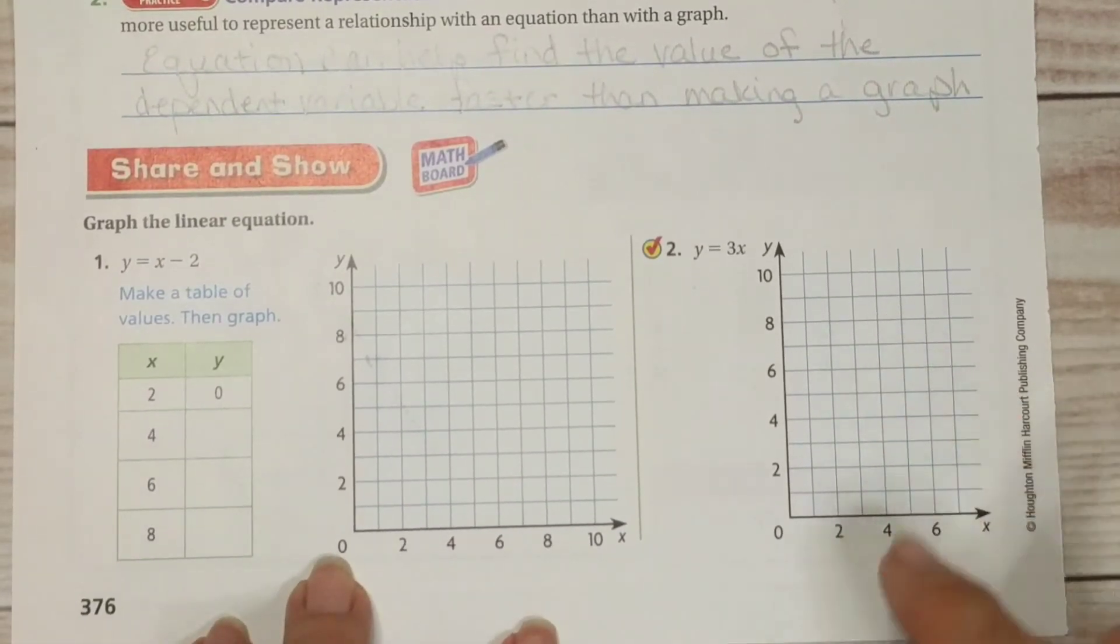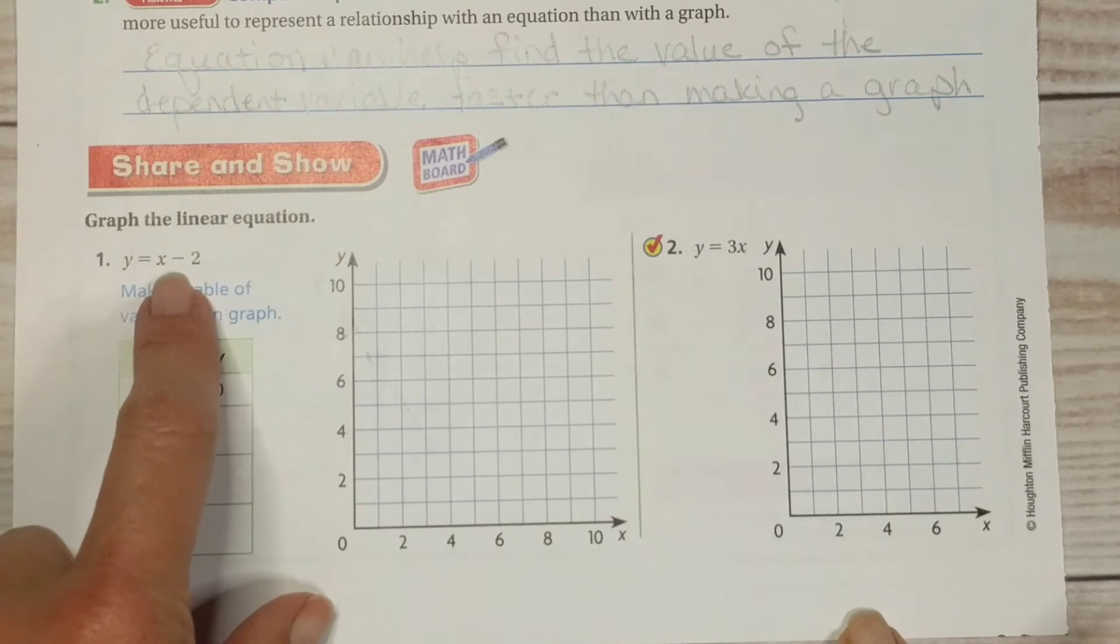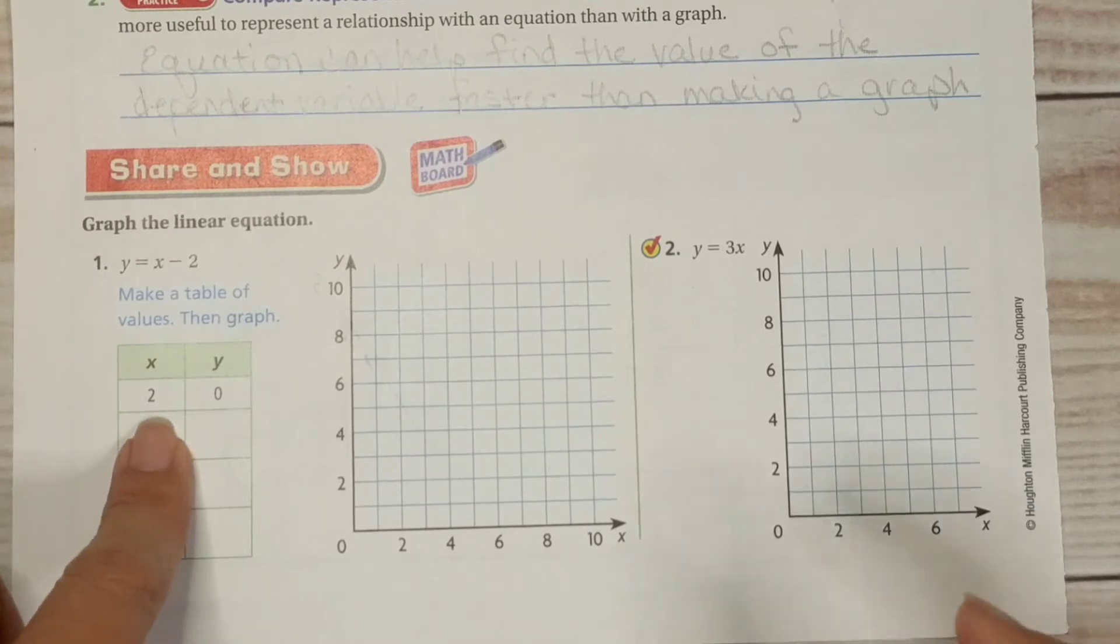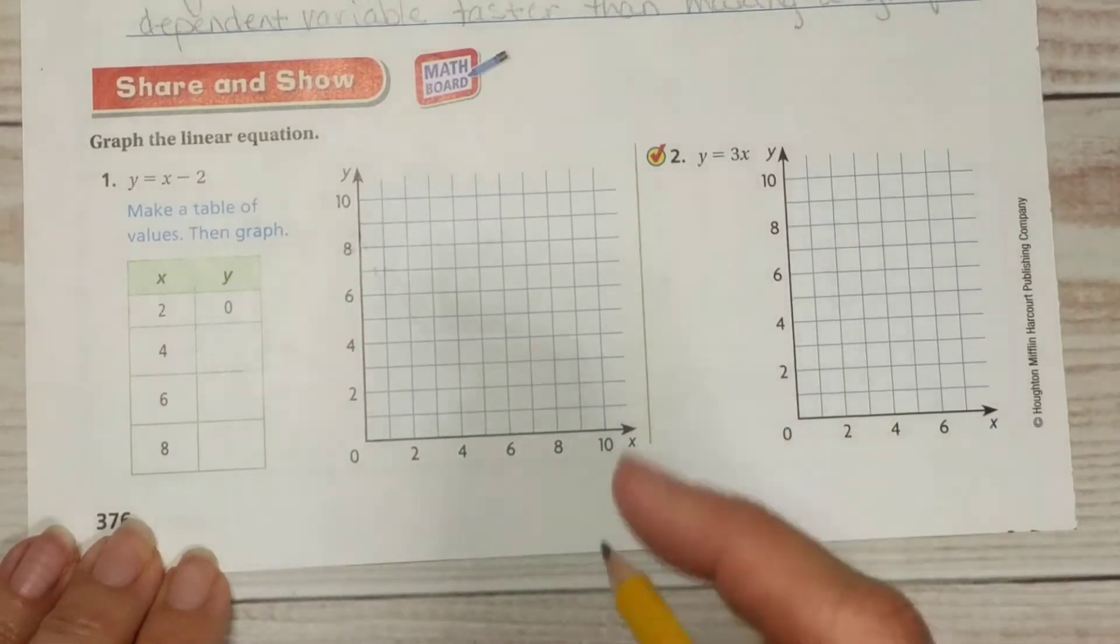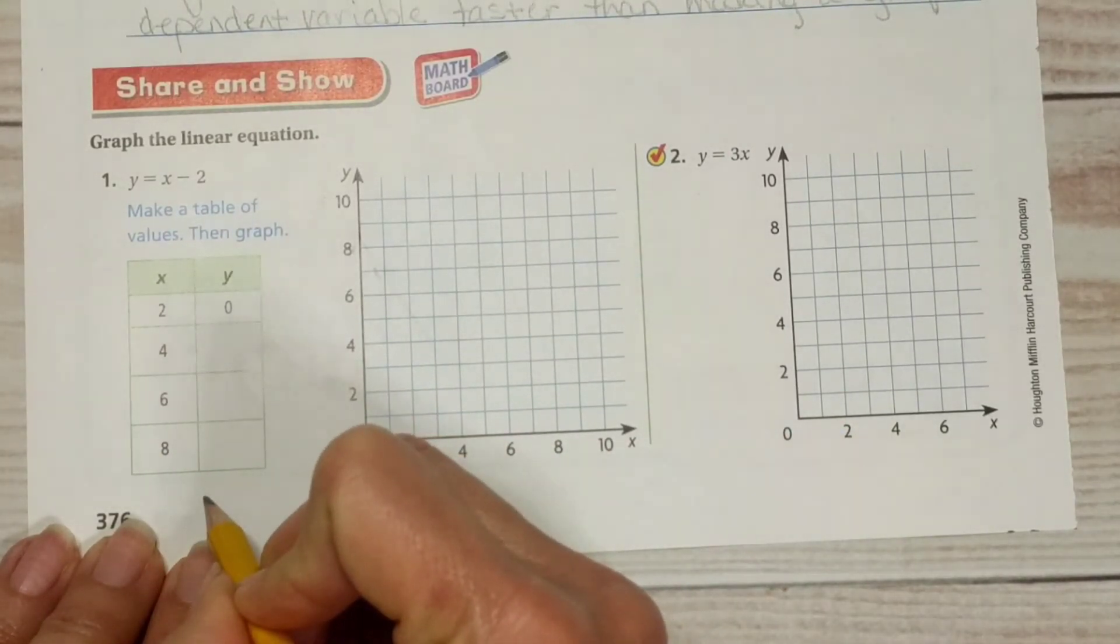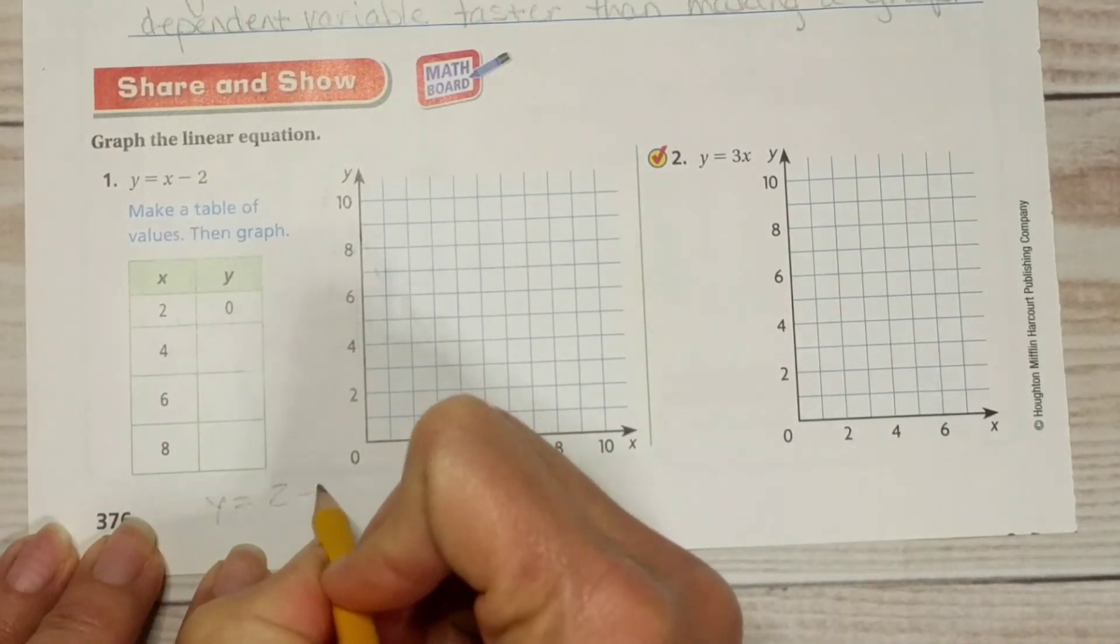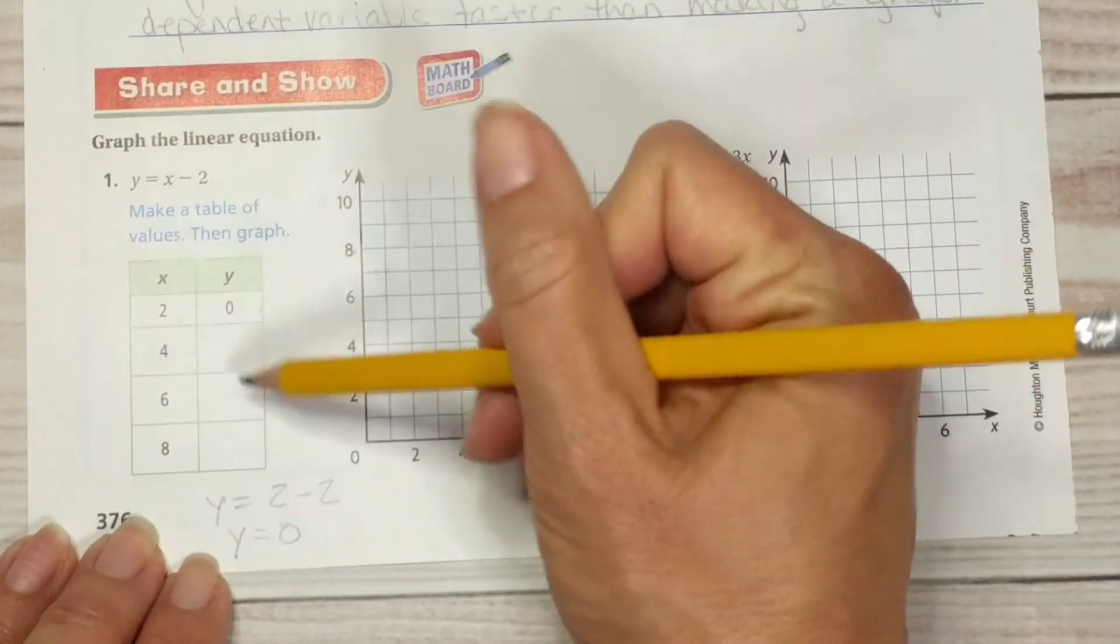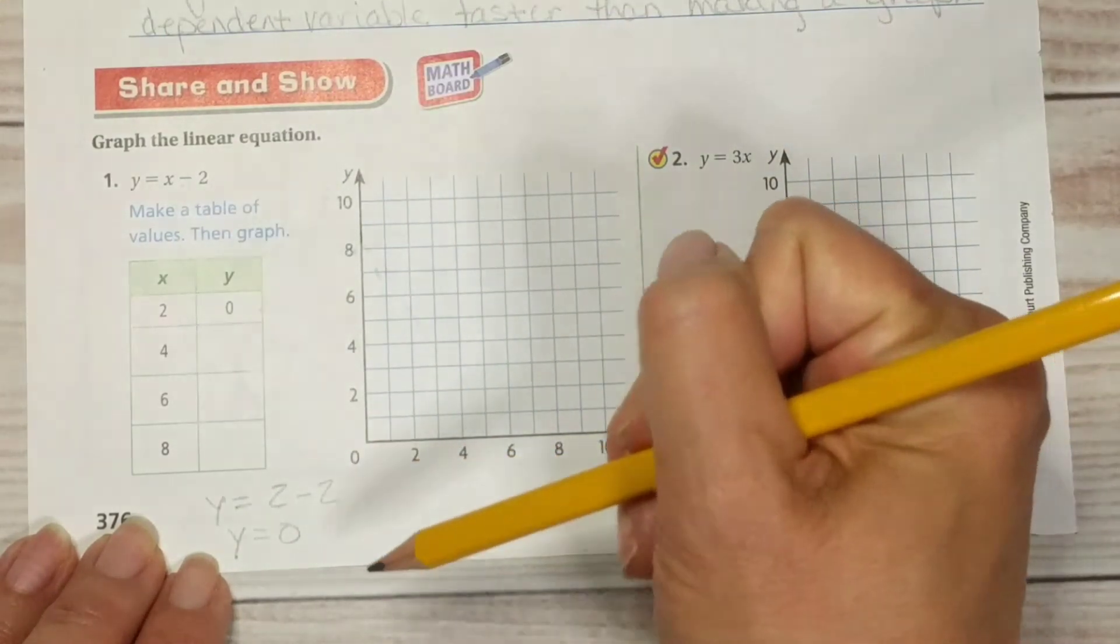But right here I can do 2 times 20 and I know that y equals 40. Do you see how fast that is? So sometimes it's faster to use an equation than a graph to find the value of the dependent variable.